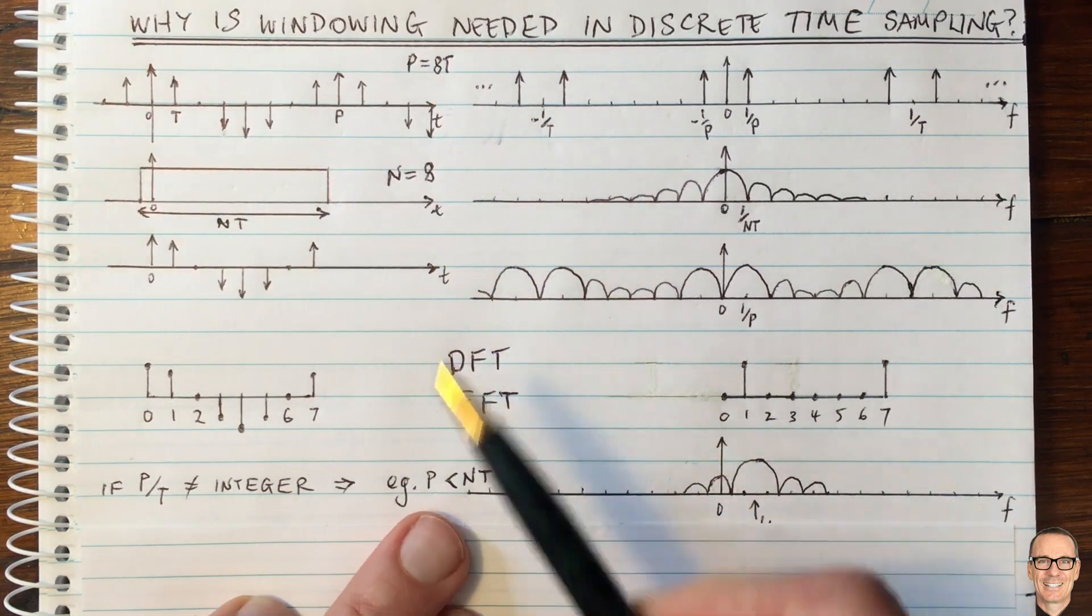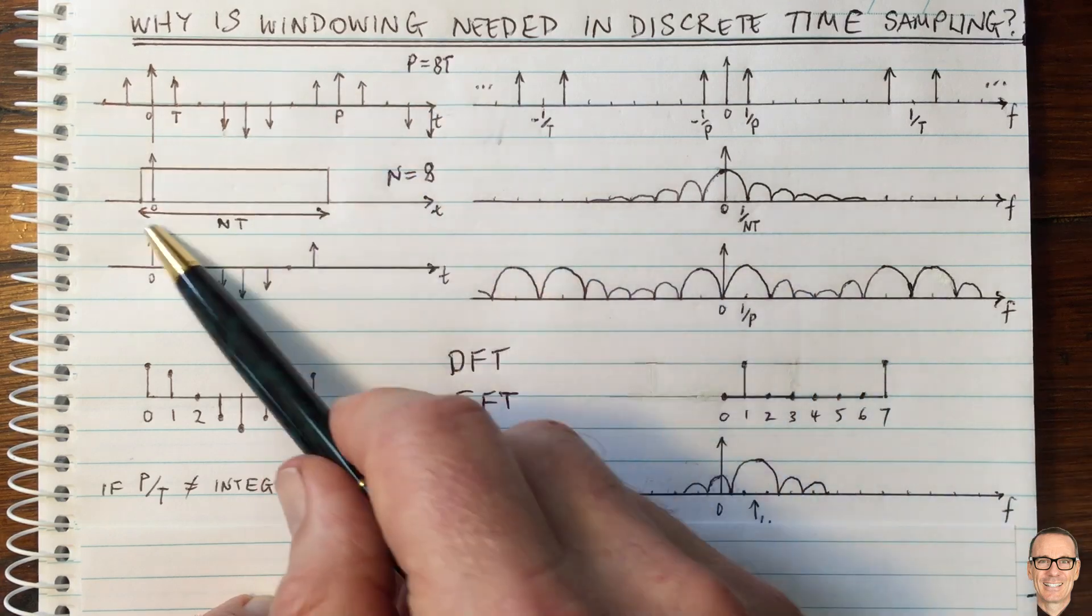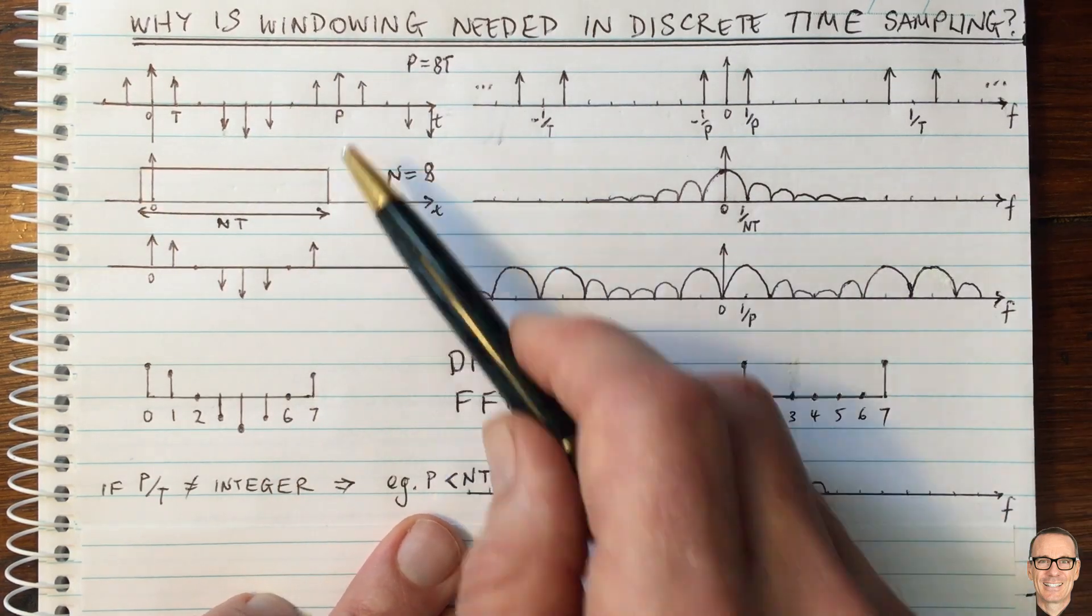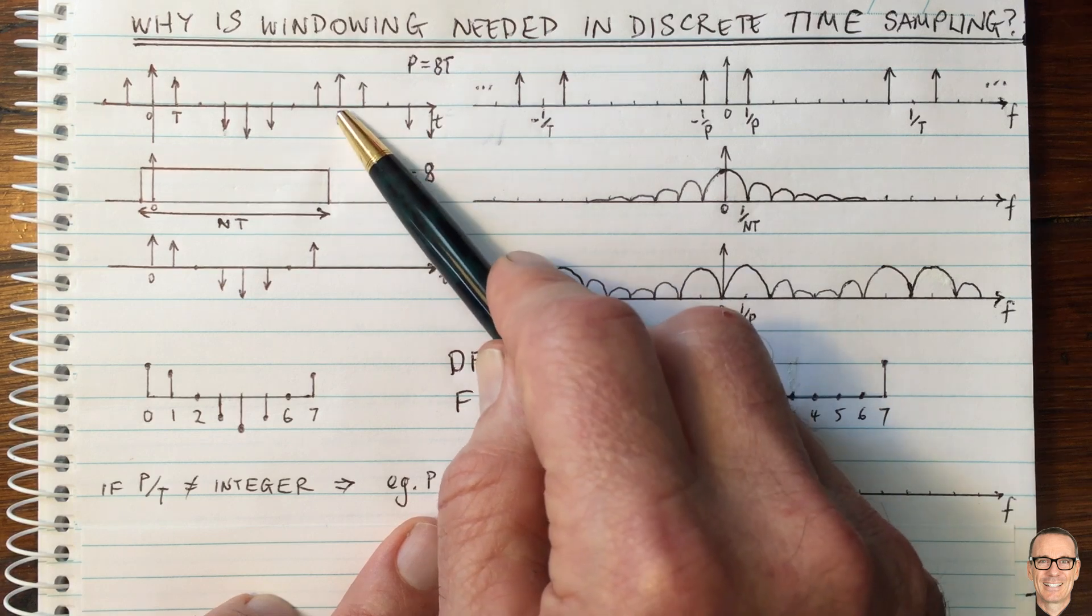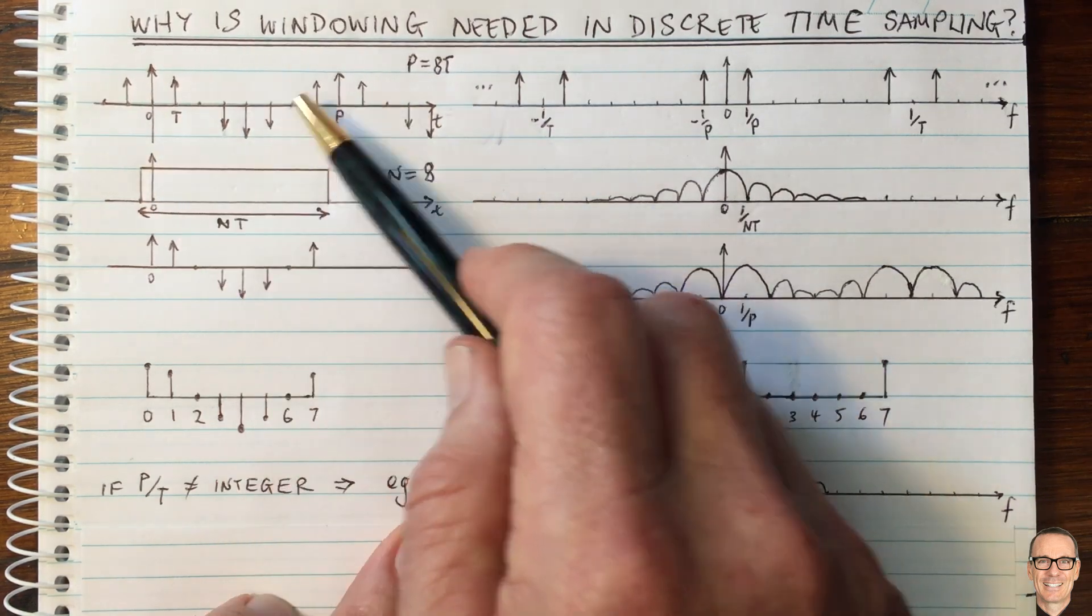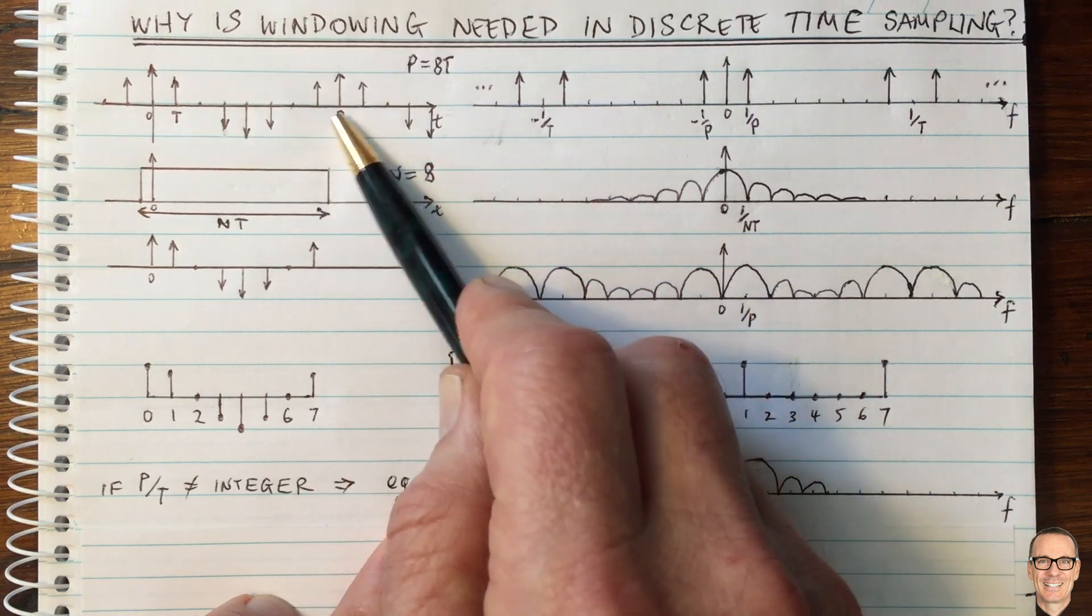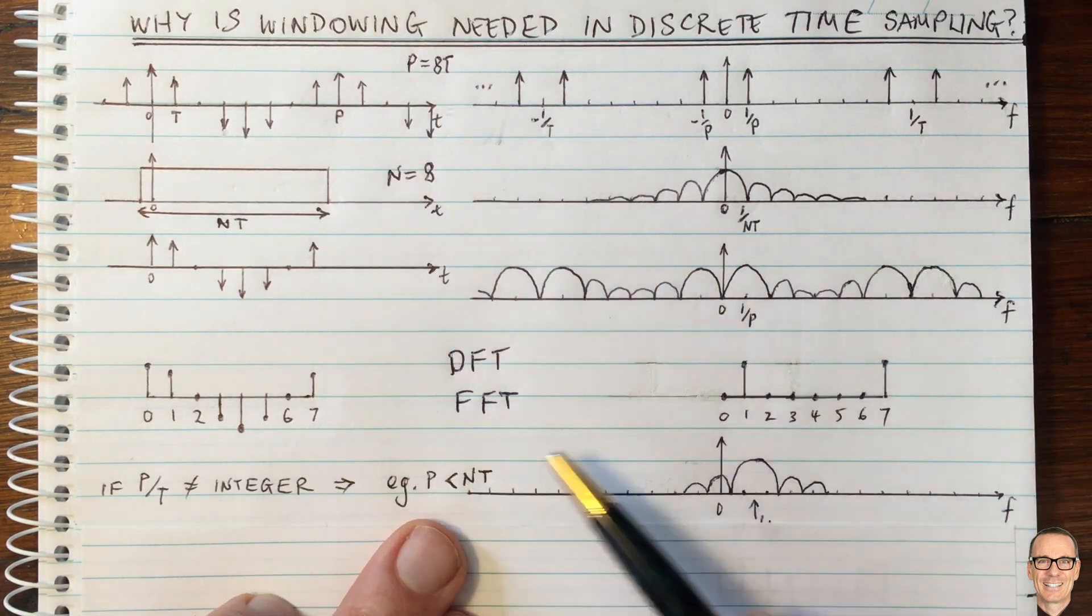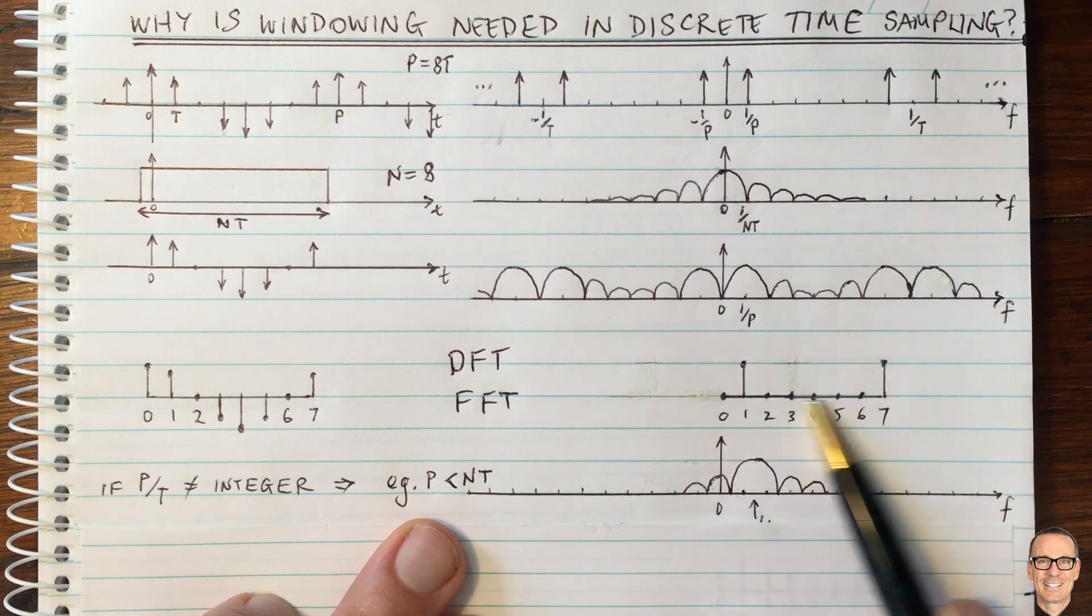But now let's consider if our signal that we were measuring, if the signal had a slightly smaller period, so it had slightly higher frequency, then this all would be compressed in towards the left because P would be smaller. What is that going to impact on our discrete Fourier transform?